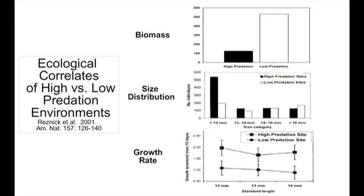One of the things I did in my guppy research program was to study the comparative ecology of guppies from high and low predation environments. What you're looking at here is a data slide that highlights some of the results for how guppies in high and low predation environments differ from one another. The upper panel shows the relative biomass of guppies per unit volume of stream in high versus low predation localities. On the y-axis, the solid bar is guppies in a high predation environment and the open bar is guppies in a low predation environment. We found that the density of guppies in low predation environments is about four to five times greater than in high predation environments.